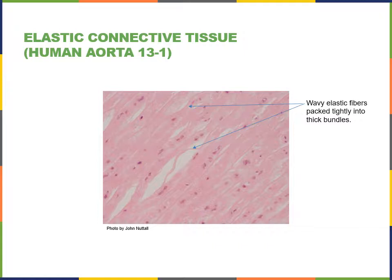Elastic connective tissue is another type of dense connective tissue proper, where there are numerous elastic fibers in order to resist stress of stretching and allow a tissue to stretch and recoil. For example, the elastic artery such as the aorta, the largest artery carrying blood out of the heart, has a large number of elastic fibers in its wall to allow it to stretch and recoil.